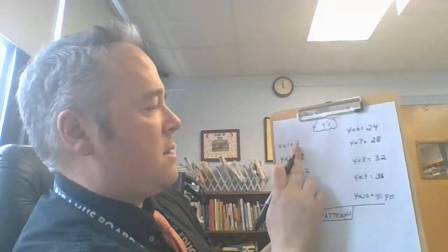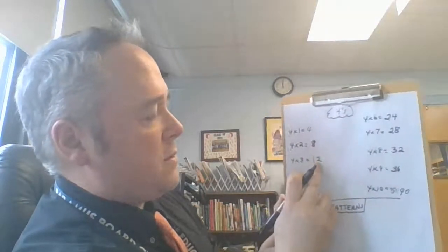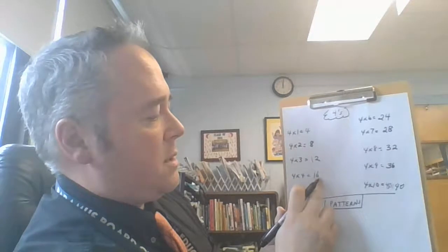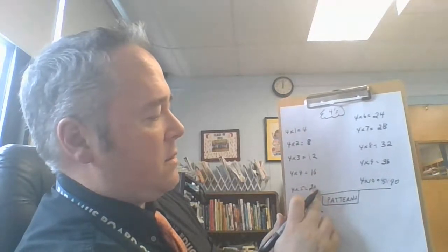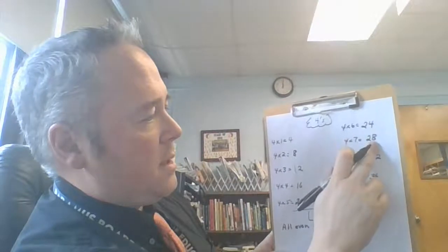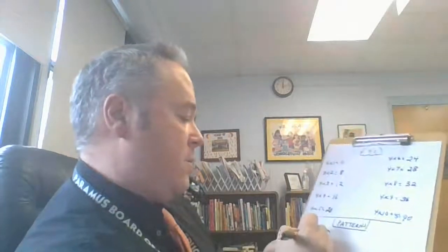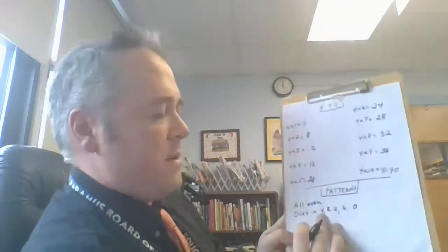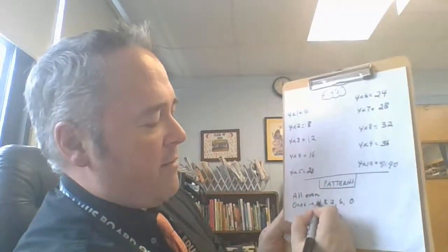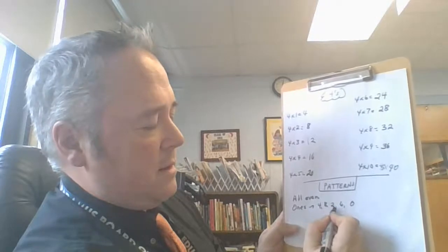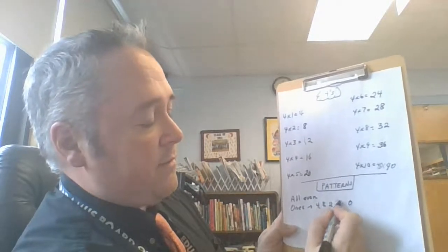What else? Let's look at the ones column. Right? Four, eight, two, six, zero. Four, eight, two, six, zero. It repeats. But it's a different kind of pattern. So the ones: four, eight, two, six, zero every time. It's like I'm adding four. Four and four is eight. Two and four is six, right?